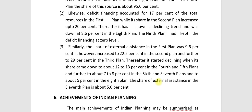The share of external assistance was 9.6% in the first plan, 22.5% in the second plan, and increased further to 29% in the third plan. After that it started declining, with its share coming down to about 12-13% in the fourth and fifth plan. The share of external assistance in the 11th and 12th plan is about 5%.